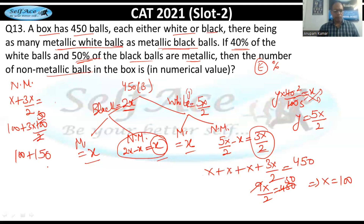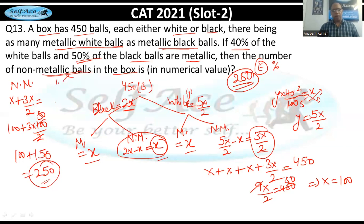Solving gives x = 100. Non-metallic balls = non-metallic white + non-metallic black = 3x/2 + x = 150 + 100 = 250. This is a very easy percentages question. You should not miss such questions — doing 10–12 of these can easily get you 95th percentile.